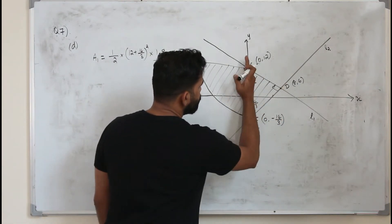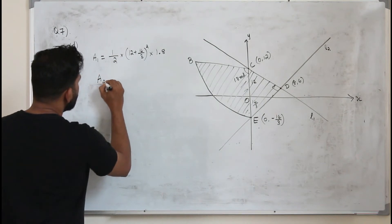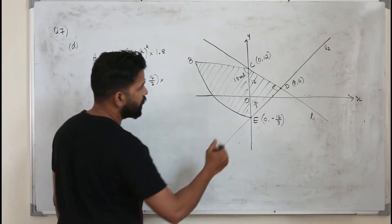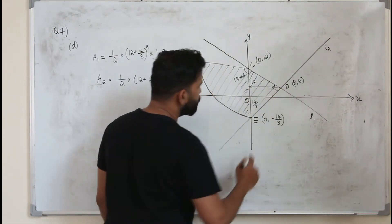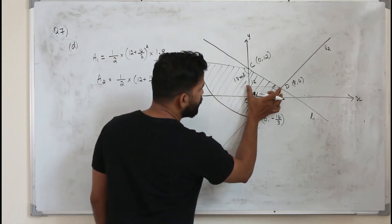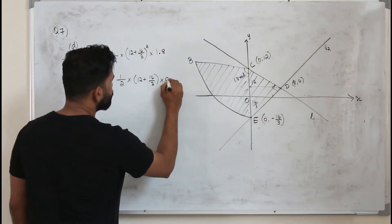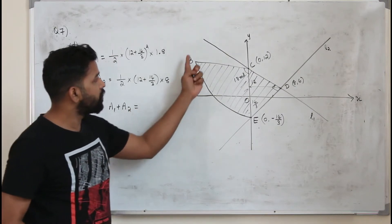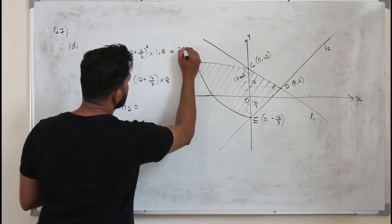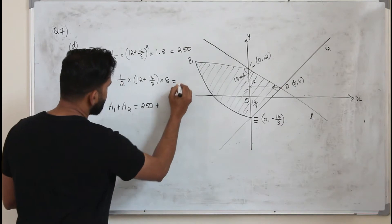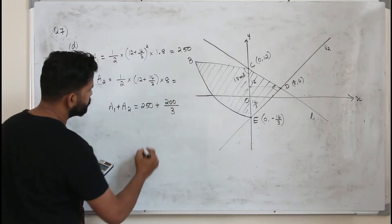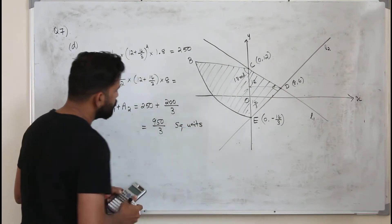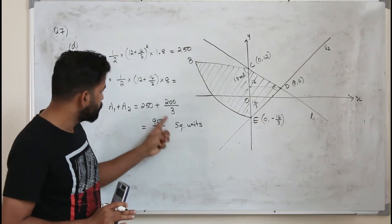For the triangle, take the side along the y-axis as the base, so the base is 12 plus 14 over 3. The height is the perpendicular distance from the third vertex D to the base, which is the x-coordinate of D, equal to 8. Calculate area A1 (sector) and area A2 (triangle) separately, then add them. The total exact area is 250 square units. Do not convert to decimal since the exact form is required.